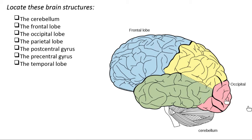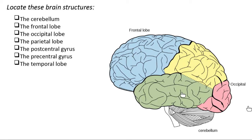The occipital lobe is the one that helps us with vision. When we talk about the process of vision, you actually see here in front of the brain and that information has to go all the way to the back of the brain in the occipital lobe. Vision is processed in the back of the brain, whereas the process of seeing things actually happens in the very front of the brain. The green lobe over here is called the temporal lobe.